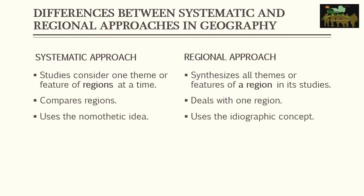Now let's look at the differences between the two approaches. The systematic approach considers one theme or feature at a time, while the regional approach synthesizes all themes or features of a region in its study. The systematic approach will look at only population, but it studies population across different places in comparison — it goes into detail on a particular feature or theme.